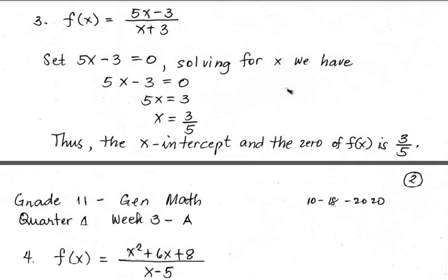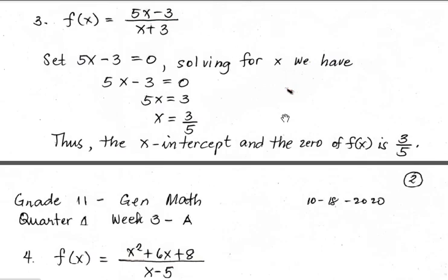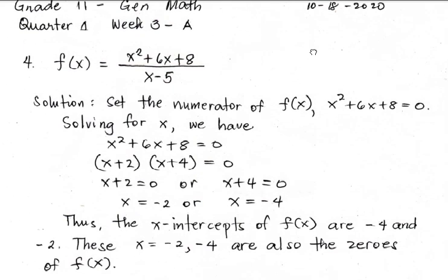Moving on to Number 3: f(x) equals (5x minus 3) all over (x plus 3). Set the numerator 5x minus 3 equals 0 and solve for x. Thus, the x-intercept is 3/5. For Number 4, f(x) equals (x squared plus 6x plus 8) all over (x minus 5).